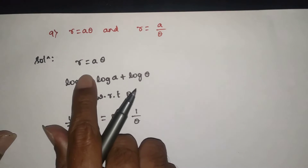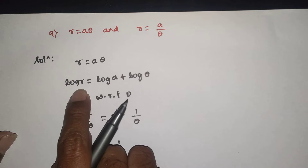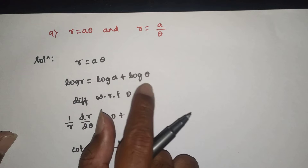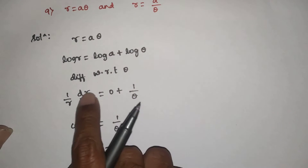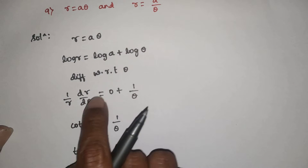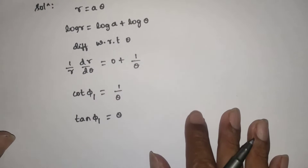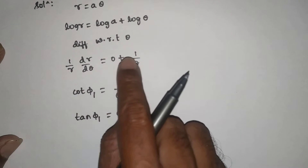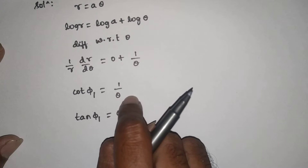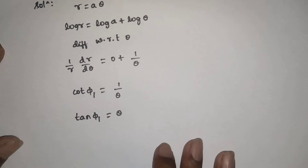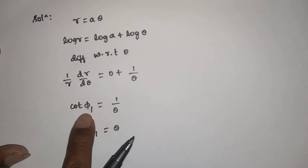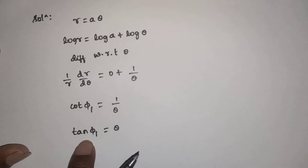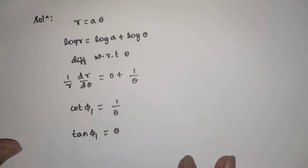For the second curve r is equal to a theta, take log r equal to log a plus log theta. Differentiate with respect to theta: 1/r times dr/dθ equals 0 plus 1/θ. So tan φ₁ is equal to θ. The reciprocal gives 1/θ, confirming tan φ₁ equals θ.